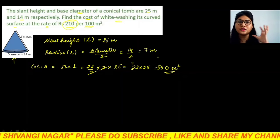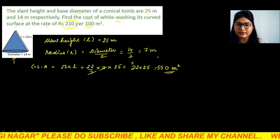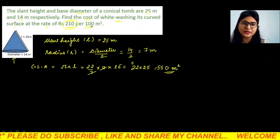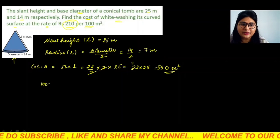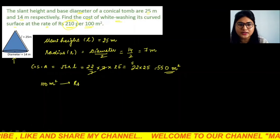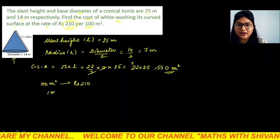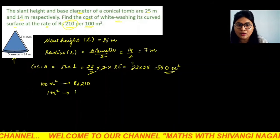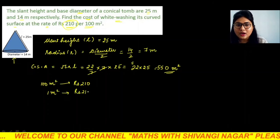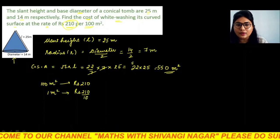Ab itne hi meter square pe hum kya karani hai? Paint karwaani hai. So we are given the cost here that 100 meter square ka jo cost, that is rupees 210. So unitary method se hum 1 meter square ka cost nikaal sakte hain. 1 meter square ka cost kitna ho jayega? It is rupees 210 upon 100.